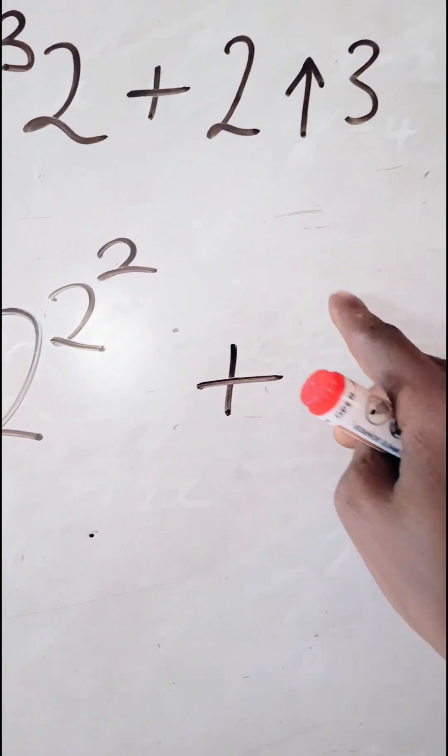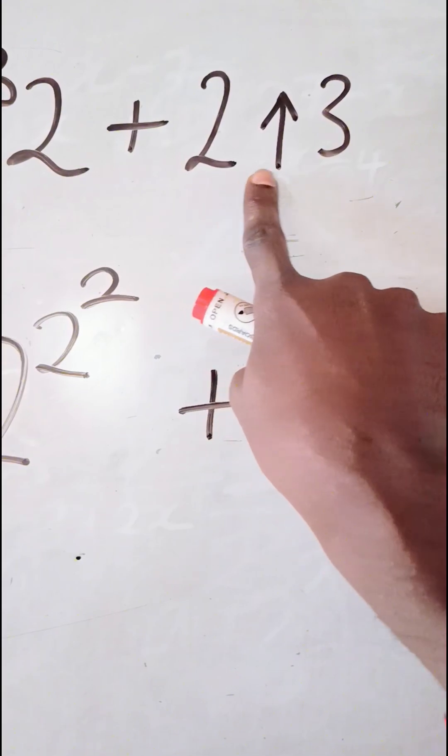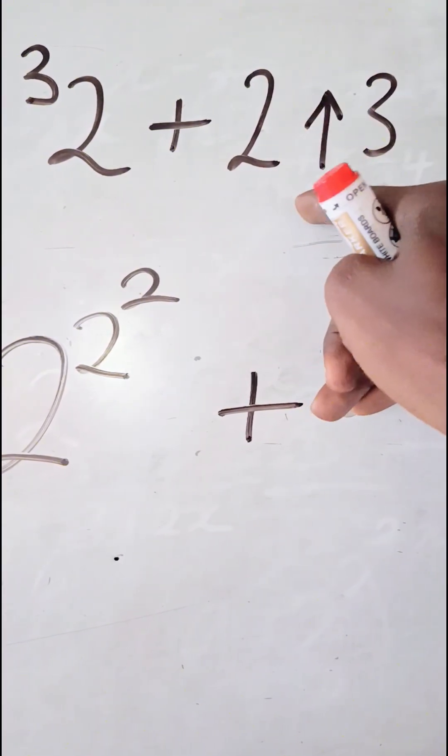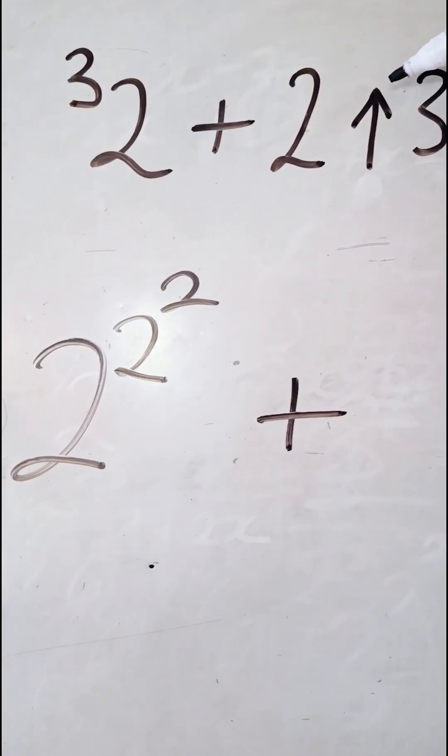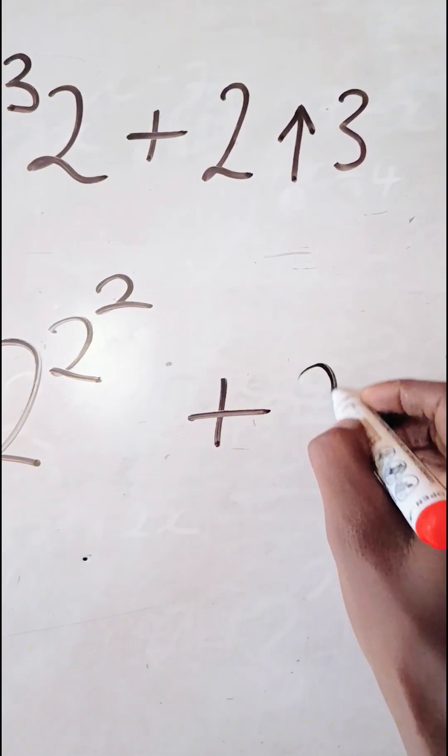Then plus, the way you have an arrow like this, this simply means two raised to power three, two to the power of three. This means exponent, exponentiation. So this is going to be written as two to the power of three, all right.